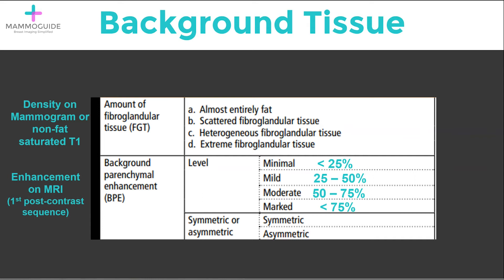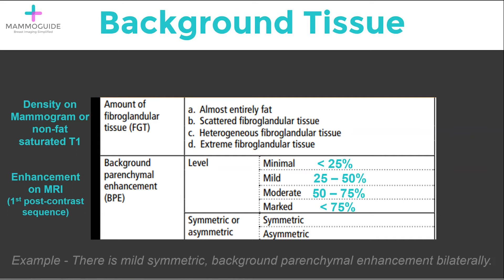This can be either symmetric or asymmetric. An example sentence that you may put in your breast MRI report is: there is mild symmetric background parenchymal enhancement bilaterally.